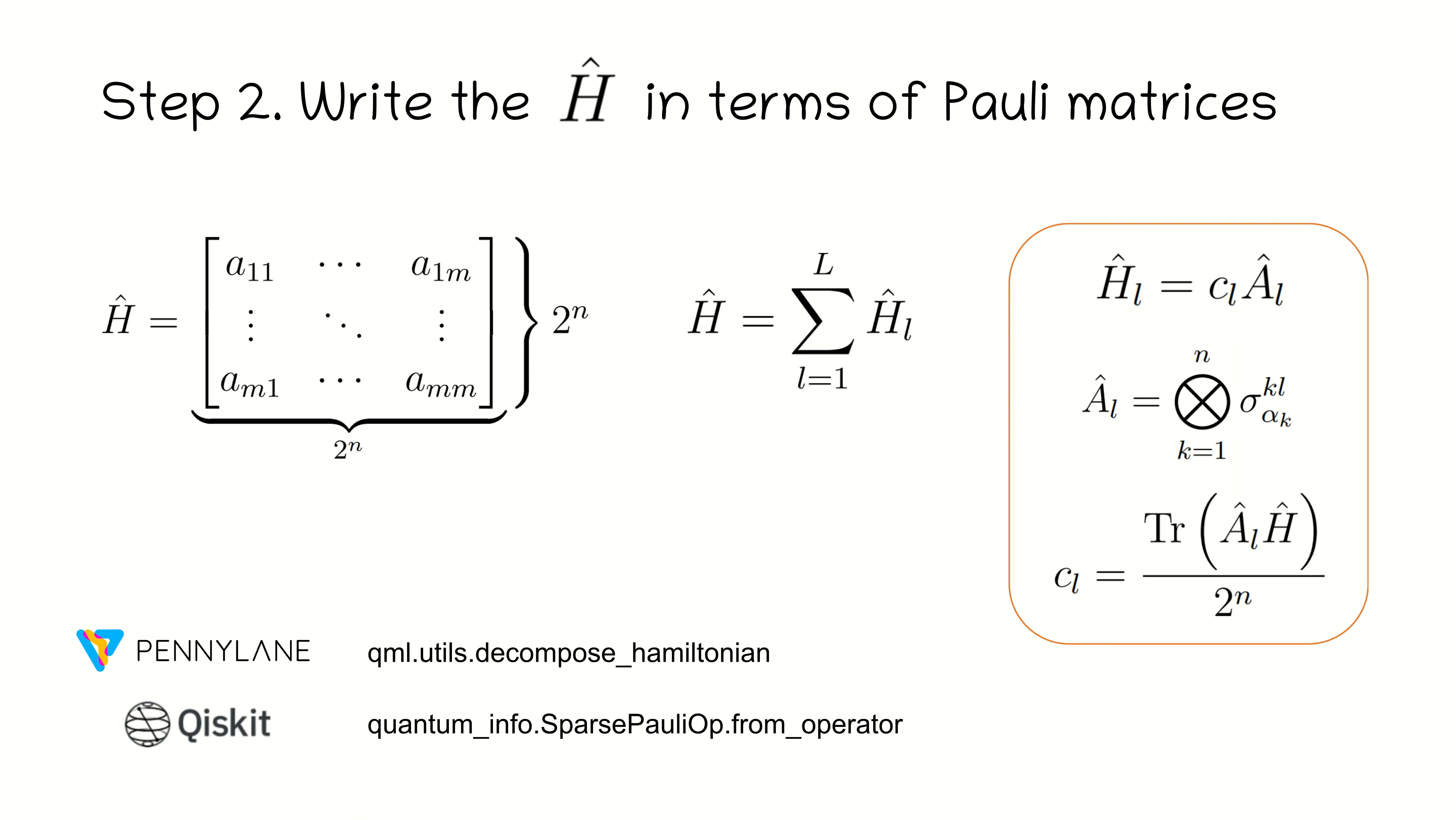Remember, the quantum simulation will be efficient whenever the Hamiltonian is the sum of local terms. This is usually not a limitation in many practical cases, because most of the physical processes are inherently local in nature.